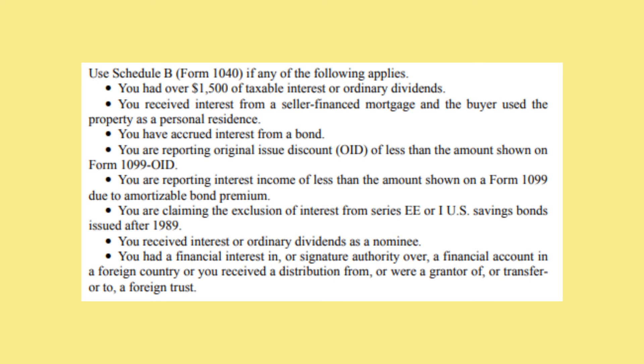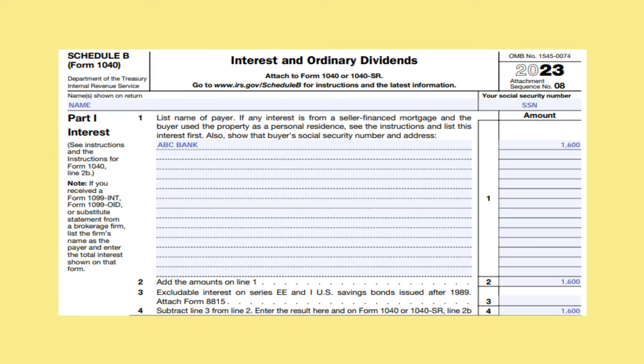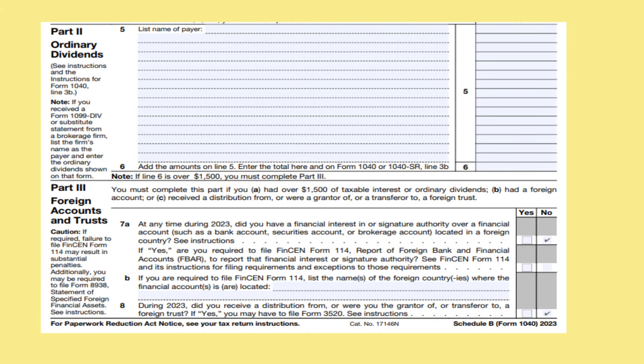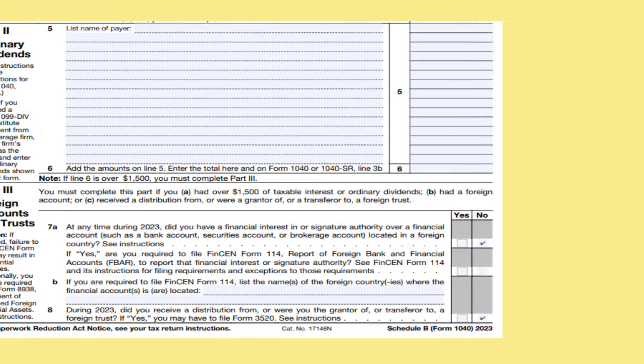Included here are some other situations in which you would also have to file Schedule B. At the top of Schedule B, put your name and Social Security number. On part 1, line 1, put the name of the payer, which is ABC Bank, and put the amount, which is $1,600. Carry that down to line 2 and down to line 4, as we don't have any excludable interest on line 3. On part 3 of Schedule B, answer the questions regarding foreign accounts. In our example, the answers are no.